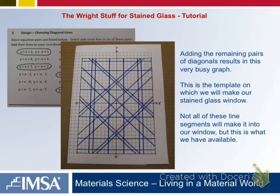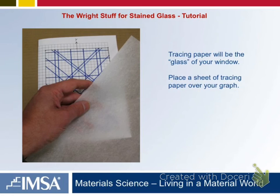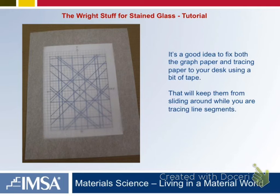When we make our window, you don't have to choose every one of these lines to trace onto your window. A lot of those windows had a lot of open space — they weren't lines all the way through. You get to pick which lines to accent. We'll get the tracing paper, which might be tomorrow or the next day when you're ready for it.